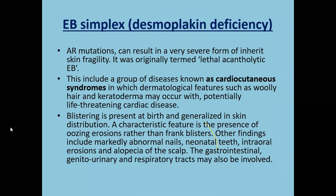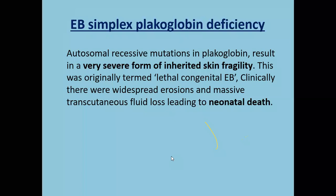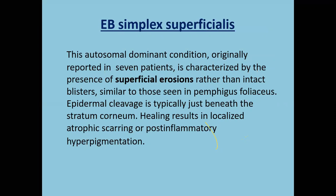EB simplex with desmoplakin deficiency is known as cardiocutaneous syndrome, in which woolly hair and keratoderma are associated with life-threatening cardiac disease. The characteristic features are oozing erosions, abnormal nails, intraoral erosions, and alopecia of the scalp. Plakoglobulin deficiency is a very severe form of inherited skin fragility, previously called lethal congenital EB, and is associated with poor prognosis. EB simplex superficialis is characterized by superficial erosions similar to pemphigus foliaceus, with daily occurrence of post-inflammatory hyperpigmentation.